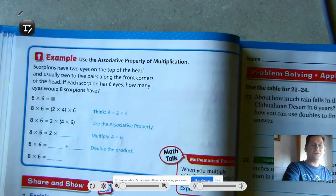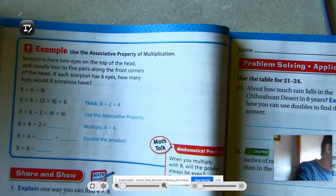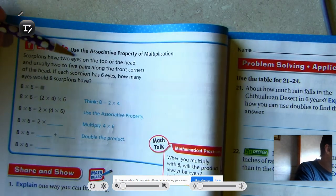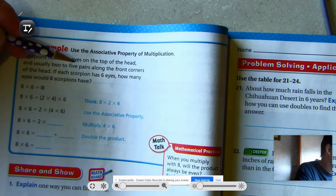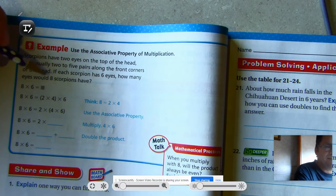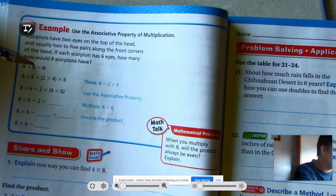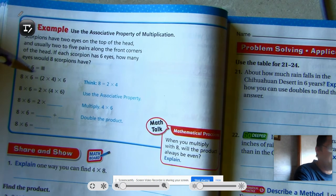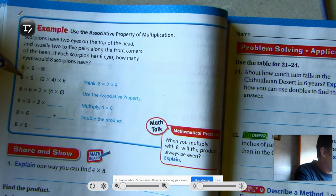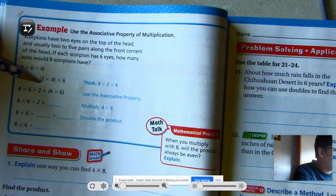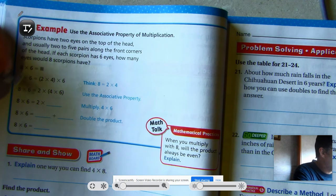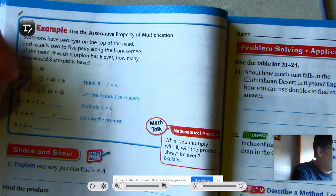Okay, a third way is we could use the associative property of multiplication. So here in this example, it says scorpions have two eyes on the top of their head and usually two to five pairs along the front corners of the head. If each scorpion has six eyes, how many eyes would eight scorpions have? So eight times six, if we're going to use the associative property, what we can do is think of eight as the product of two and four. We notice that two and four are easier factors to multiply than eight. We put them into smaller problems.